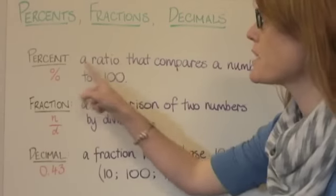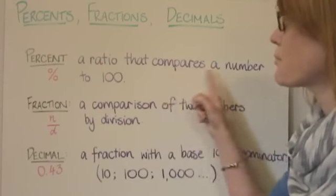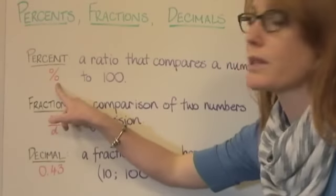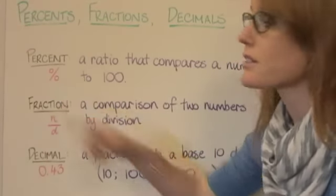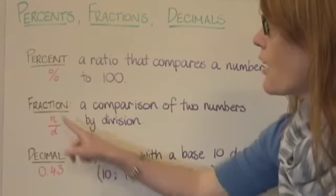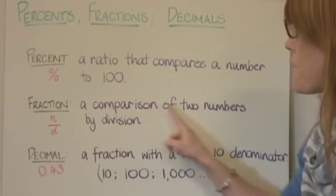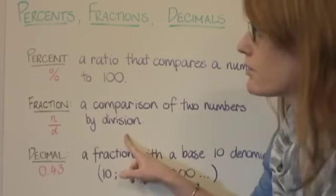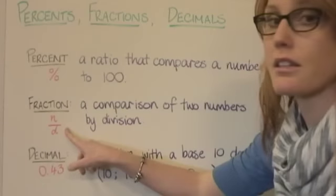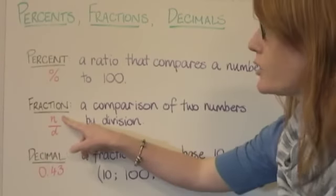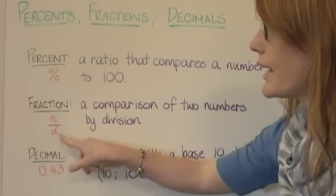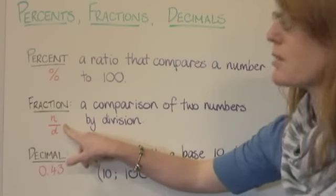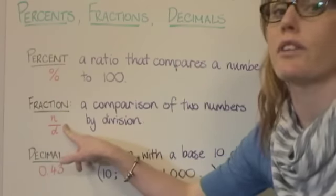A percent is a ratio that compares a number to 100, and this is the symbol we use for percent. A fraction is a comparison of two numbers by division, and it looks like this. We have a numerator and a denominator, and they are separated by this line called the vinculum.